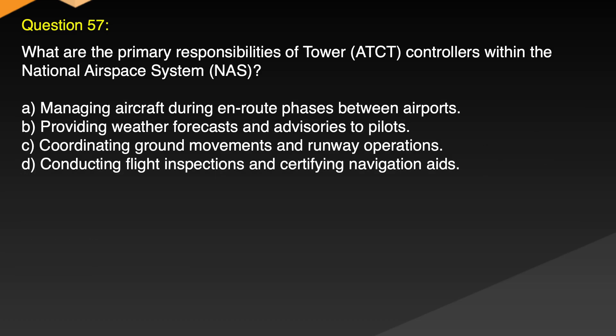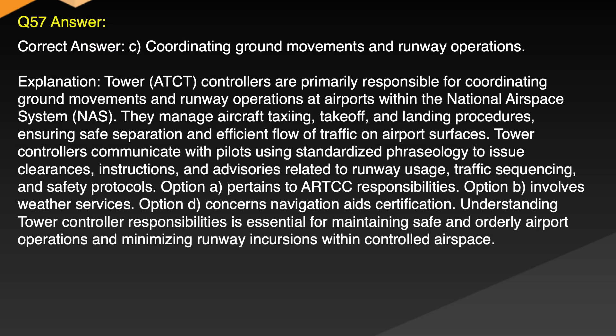Question 57. What are the primary responsibilities of Tower ATC controllers within the National Airspace System, NAS? A. Managing aircraft during en route phases between airports. B. Providing weather forecasts and advisories to pilots. C. Coordinating ground movements and runway operations. D. Conducting flight inspections and certifying navigation aids. Correct answer: C. Coordinating ground movements and runway operations.